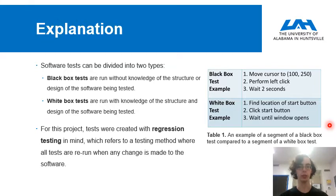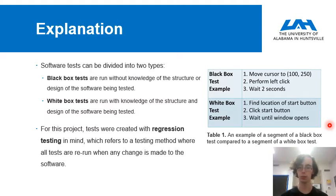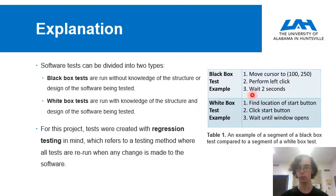White box tests, on the other hand, are run with knowledge of the structure and design of the software being tested, and the testing program can use information gathered from the software during the tests in order to inform it on what exactly its next steps should be. For example, a black box version of a test might instruct the testing program to move the cursor to a specific hard-coded location, perform a left click, and then wait two seconds, while a white box version of that same test might inform the testing program to find the location of the start button, click the start button, and then wait until a window has opened.